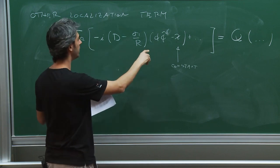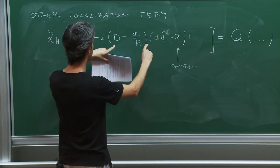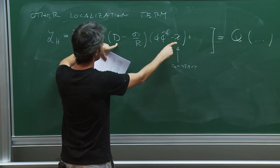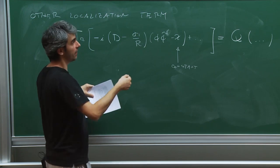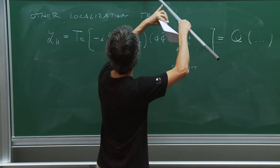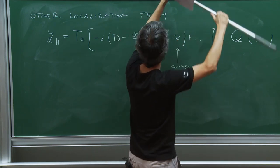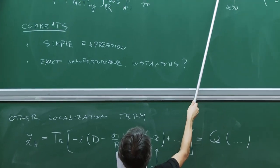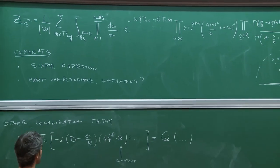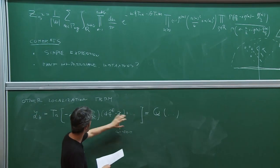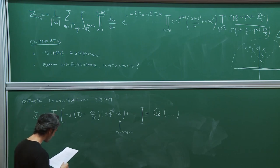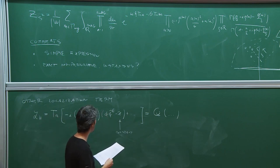This term looks a little bit like a Fayet-Iliopoulos term, because the Fayet-Iliopoulos term precisely is a term linear in D. However, the partition function does depend on the physical Fayet-Iliopoulos term xi. This new term is a sort of Fayet-Iliopoulos term dressed with other stuff in such a way that there is no dependence on it. Now this action is not positive semi-definite. However, D appears in the action just without derivatives and quadratically, so there is no problem in doing the path integral over D by hand without localization.